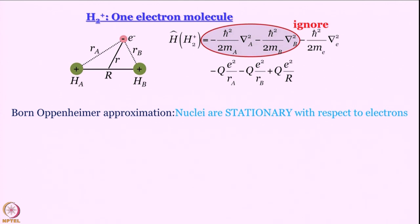We can consider the nuclei to be stationary with respect to the electrons. The moment we do that, we get to ignore the kinetic energy terms in the Hamiltonian. That is a great relief. Moreover, we can consider the last term to be constant. So essentially, we can work with these three terms: kinetic energy of electron and potential energy for attraction of the electrons with the two nuclei.